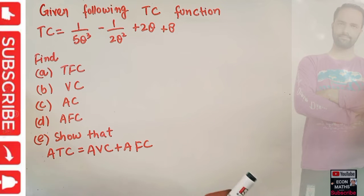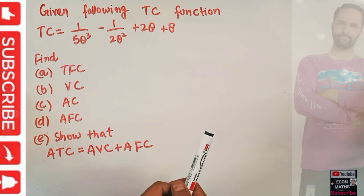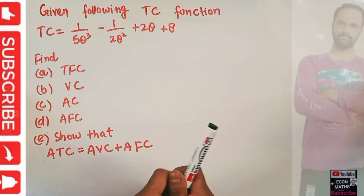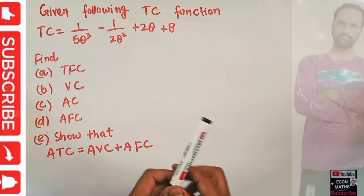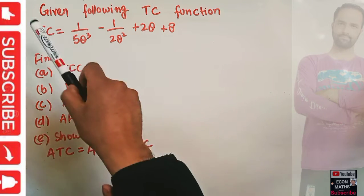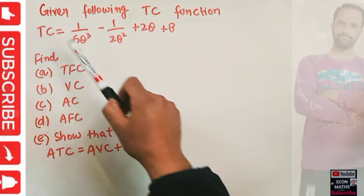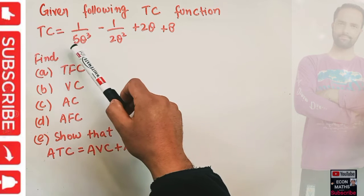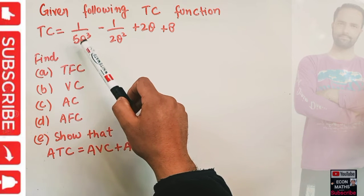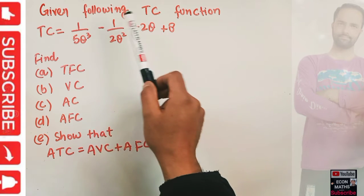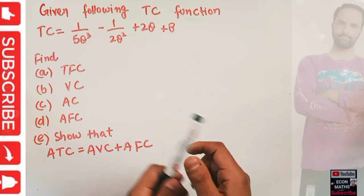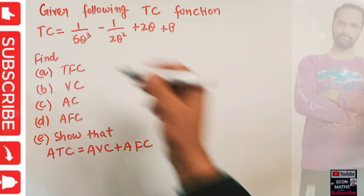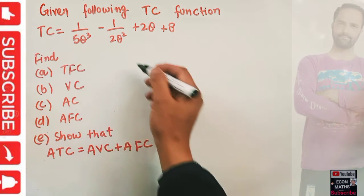In this video we will learn how to derive the total fixed cost, variable cost, average cost, and average fixed cost from the given total cost function. The question is: given the total cost function TC = 1/5 q³ − 1/2 q² + 2q + 8, where q denotes output and TC denotes total cost, we have to find out the total fixed cost first.